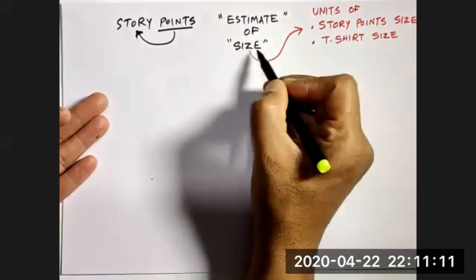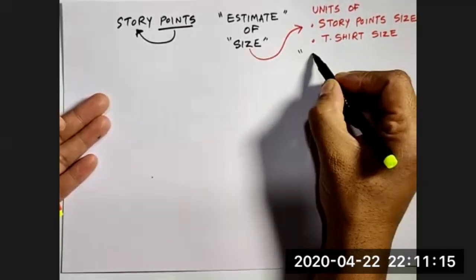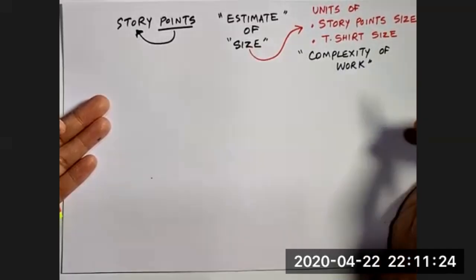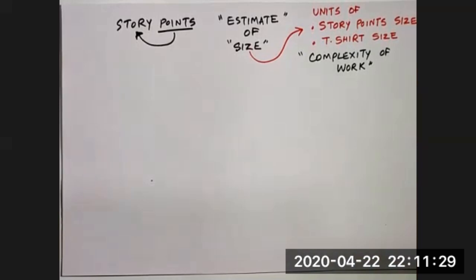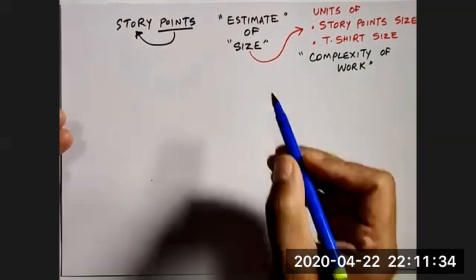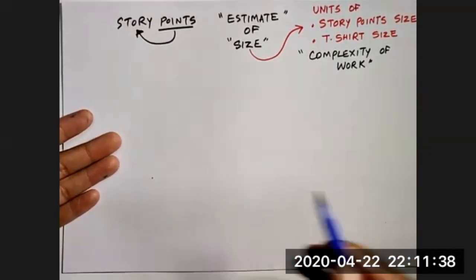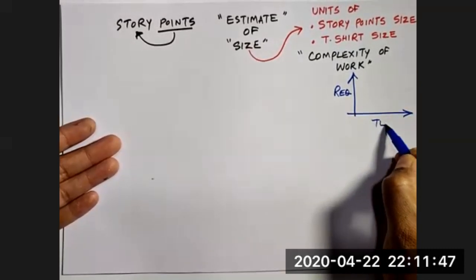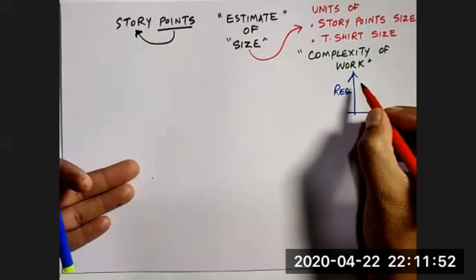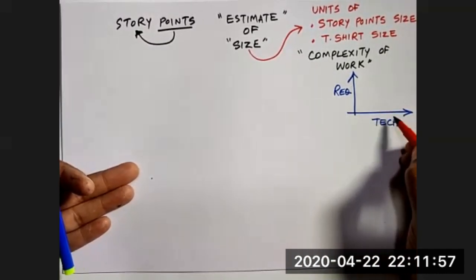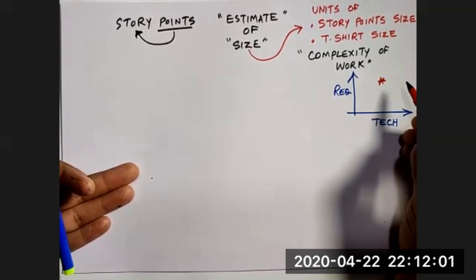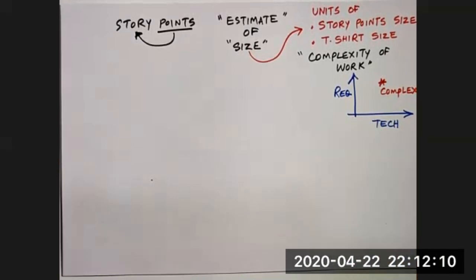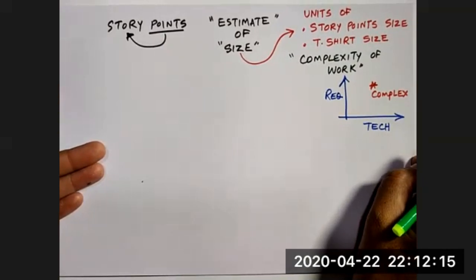As we understand, this is an estimate of size — it indicates we are looking at the complexity of the work and requirements. The work that has been identified: how complex is it? We can look at this in terms of the Stacey diagram, considering requirement clarity and technology. Something listed in the complex zone cannot be indicated with effort alone, so we use what is called estimation by relative sizes.